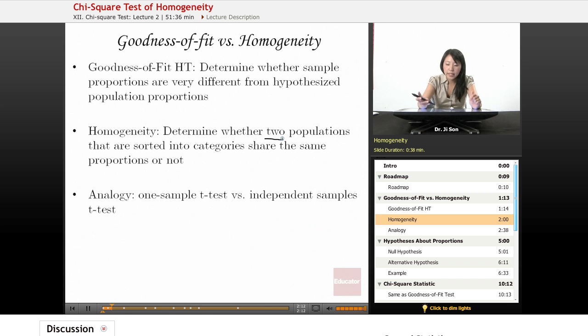Here, you could also substitute this word population, because ultimately we're using the sample as a proxy for the population. So we have two populations, and we want to know whether those two populations are similar in their proportions or not. We're not comparing them to some hypothesized population. We're comparing them to each other.